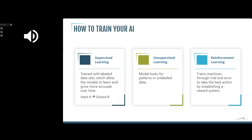Reinforcement learning trains machines through trial and error to take the best action, establishing a reward system with the machine. You type something in, it goes through trial and error, then asks 'did this meet your needs?' You'll see this online with things like 'did you find this article helpful?' Over time it gradually gets fine-tuned. This is why two people typing the same thing in ChatGPT can get different results — it's evolving in those ways.